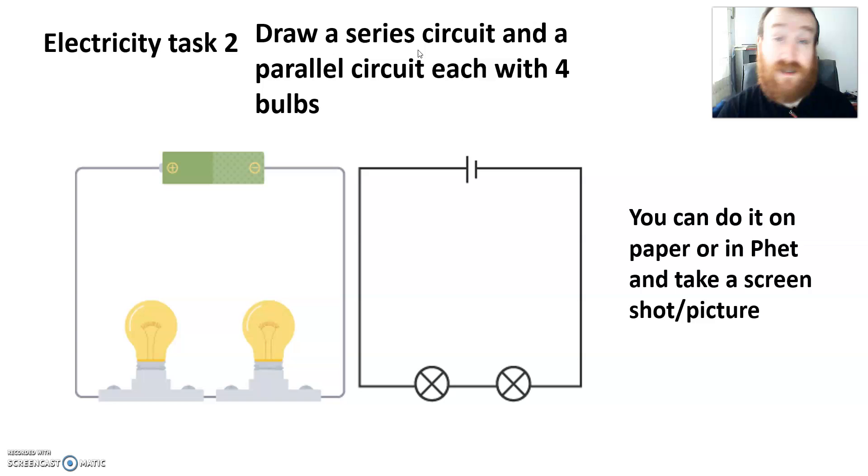In the parallel circuit, it's up to you how you arrange those bulbs. You might have three on one row and one on the other. You might have two on each row, but I want to have four bulbs in that parallel circuit.